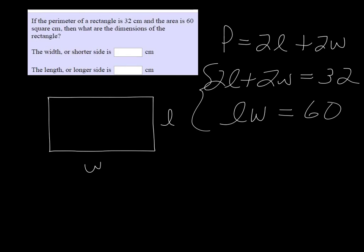So we can use these two equations to help us find what l and w are. Probably the easiest way is to solve for l or w with the l times w equals 60 equation.